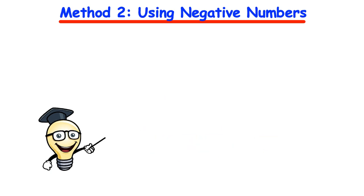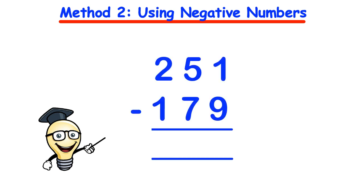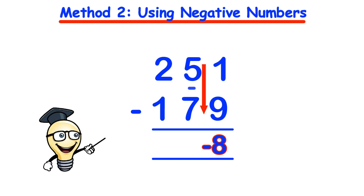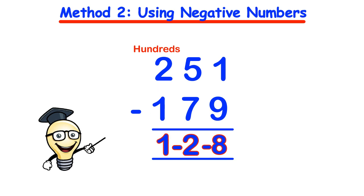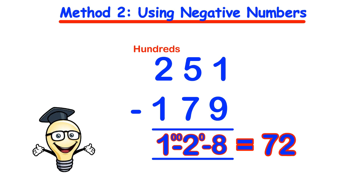Let's consider another example: 251 take away 179. Starting from the right hand side: 1 take away 9 gives us minus 8, so we put that in the answer line. Then 5 take away 7 gives us minus 2. Together, minus 2 and minus 8 reads as minus 28. Then in the hundreds column, 2 take away 1, or 200 take away 100, is 100. So we have 100 minus 28: 100 minus 20 is 80, and 80 minus 8 is 72. The answer is 72.